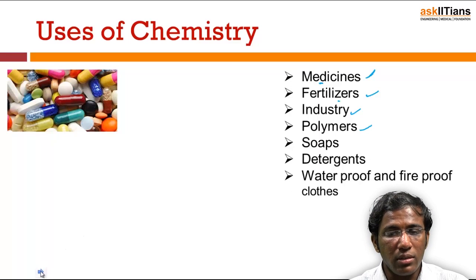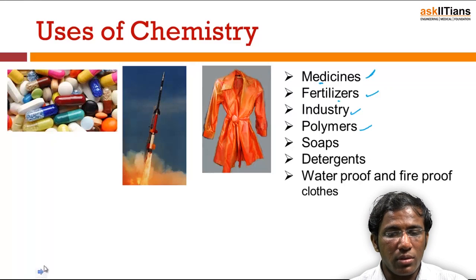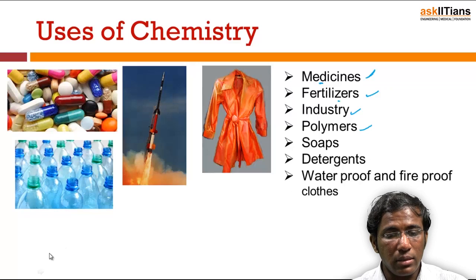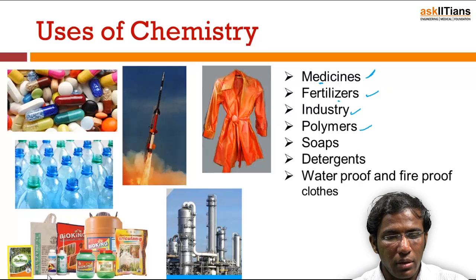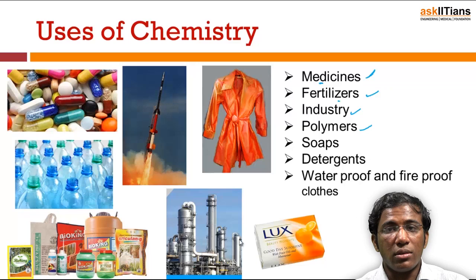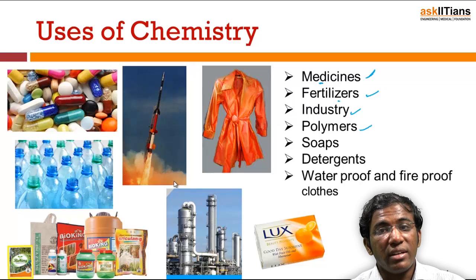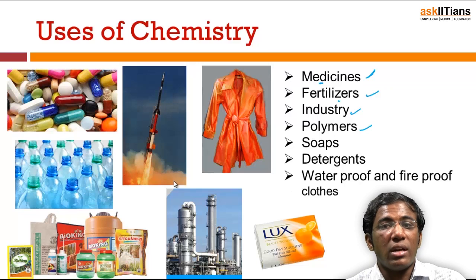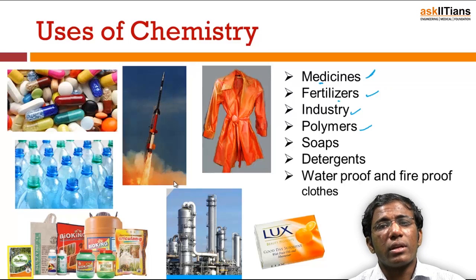As you can see in this picture: tablets are made up of chemicals, rockets use fuel which is chemical, waterproof and fireproof clothes are made up of chemicals, water bottles and plastics are polymers made up of chemicals, pesticides and fertilizers are also made up of chemicals, industries use chemicals, and even the soaps and detergents that serve our daily purpose are all made up of chemicals. Chemistry is everywhere — whatever things we use in our day-to-day life, starting from soap to tablets and medicines to fertilizers, chemistry plays a major role in our life.